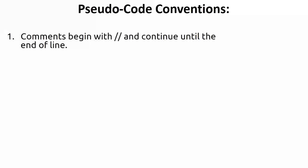Now we'll see the pseudo code conventions — the rules for representing an algorithm in pseudo code. The first rule: comments begin with two slashes (//) and continue until the end of the line, similar to single-line comments in C. You provide two slashes for each comment line you want to write.